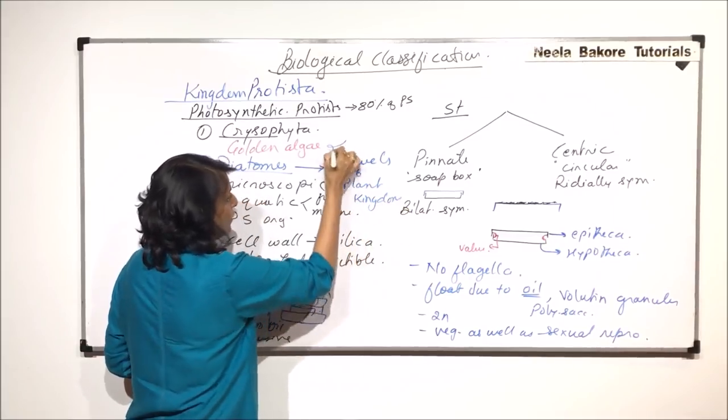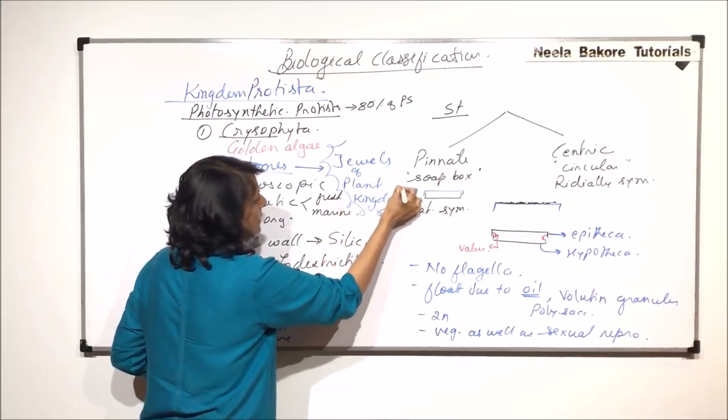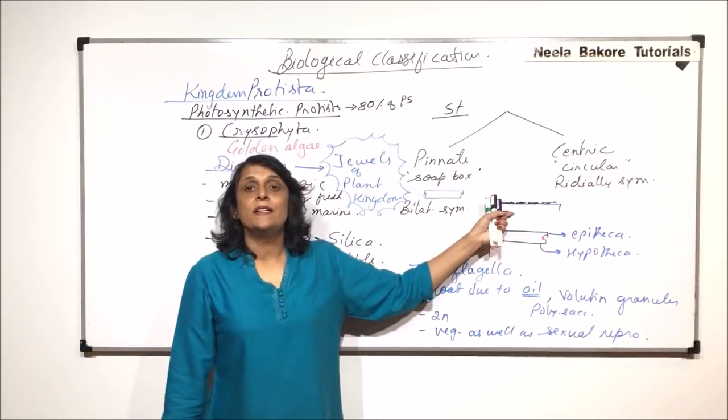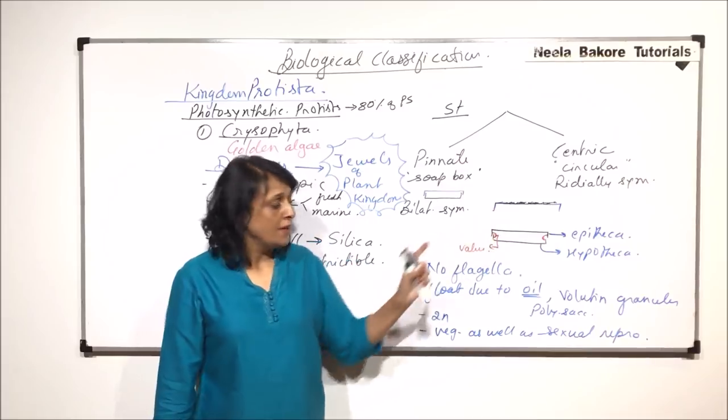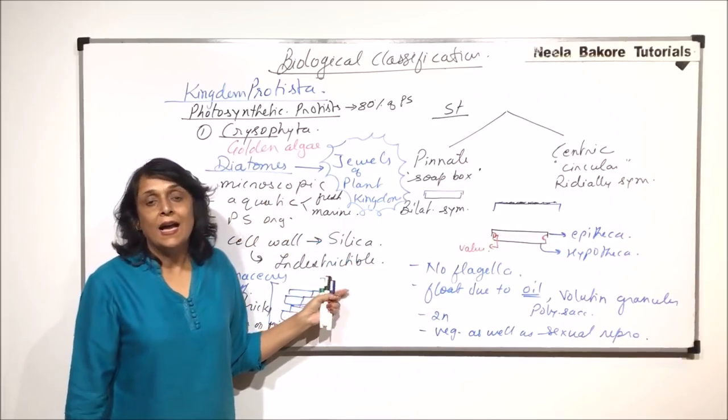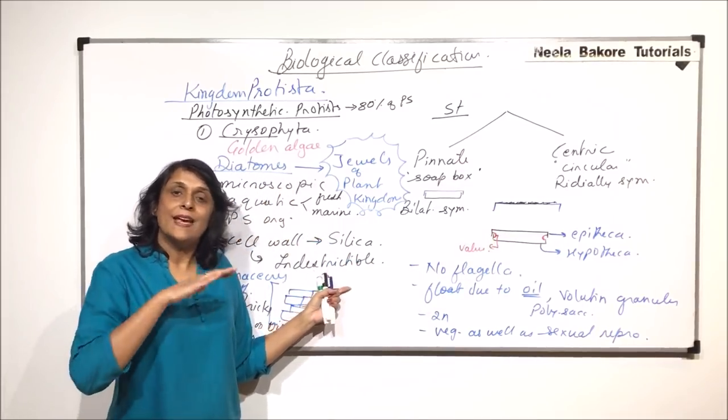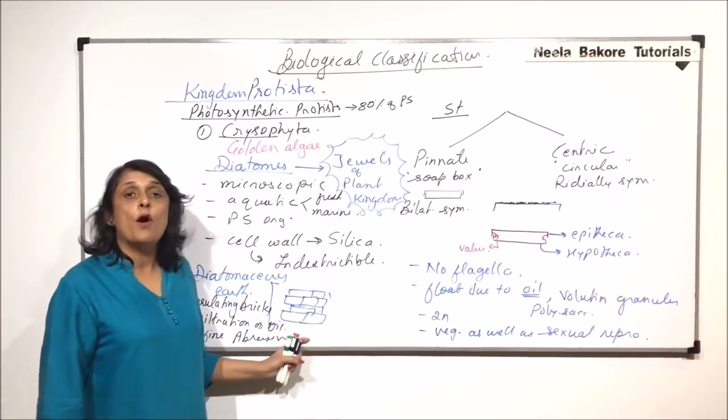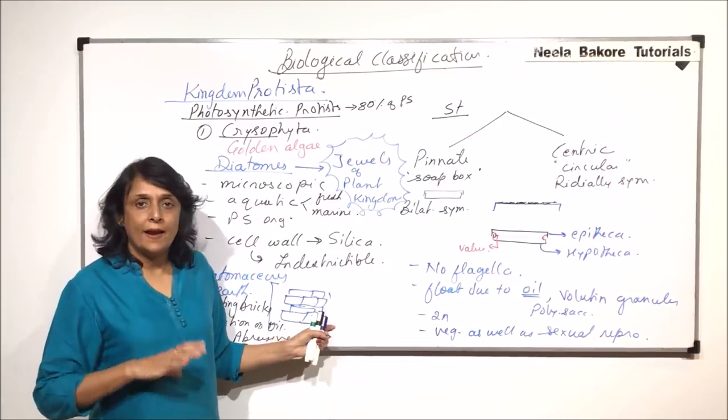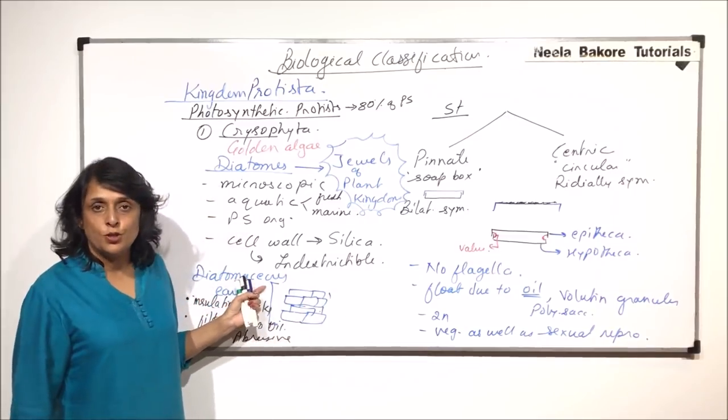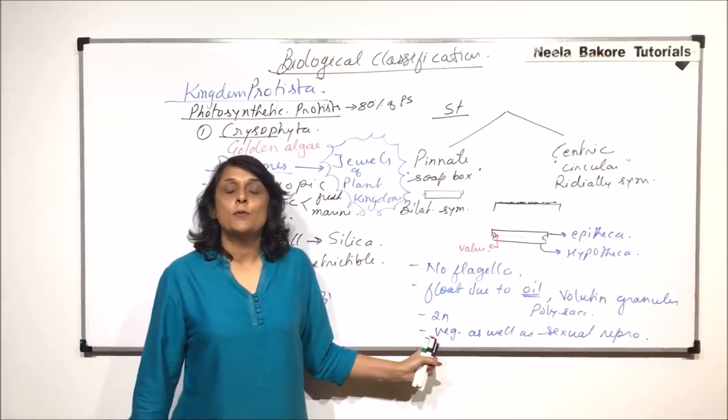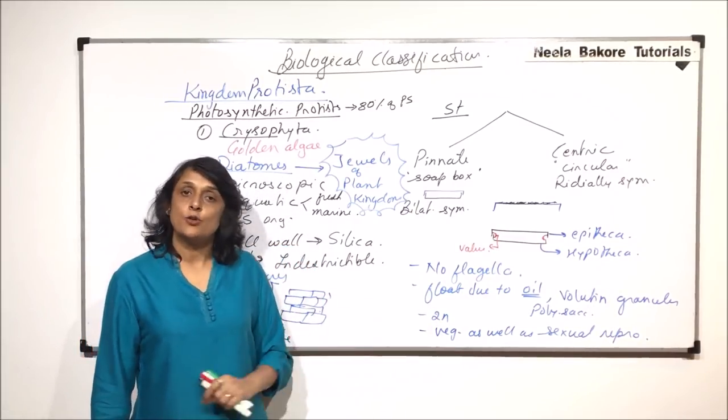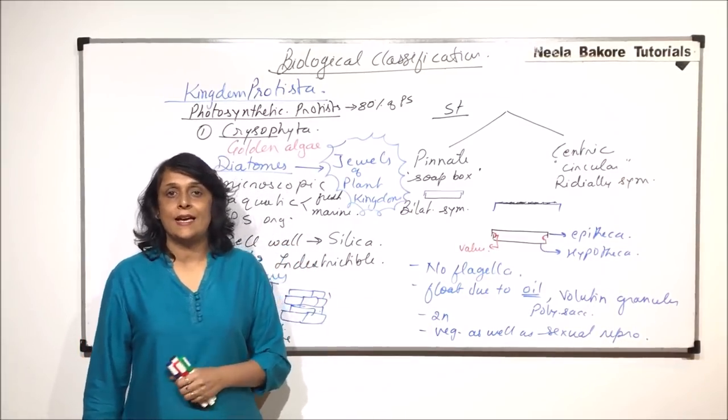That is why these diatoms are known as jewels of the plant kingdom. The reason for giving them this specific term is the ornamental appearance which they have due to deposition of silica. Because of this silica, they get deposited layer generation after generation to form a very thick layer which is called the diatomaceous earth. In the next part, we will talk about how exactly vegetative and sexual reproduction takes place in diatoms.